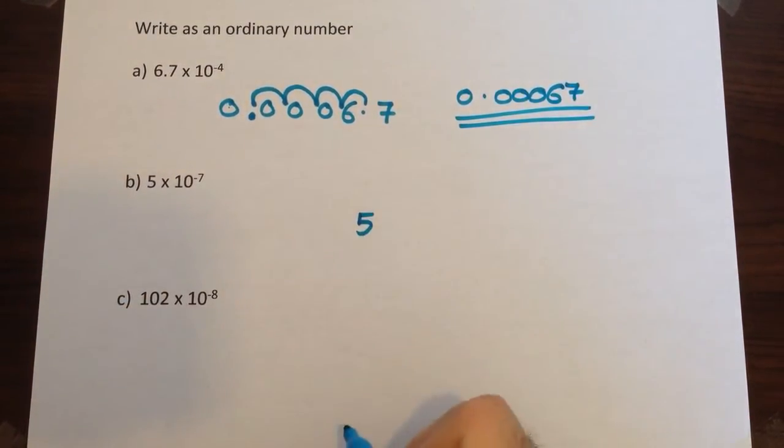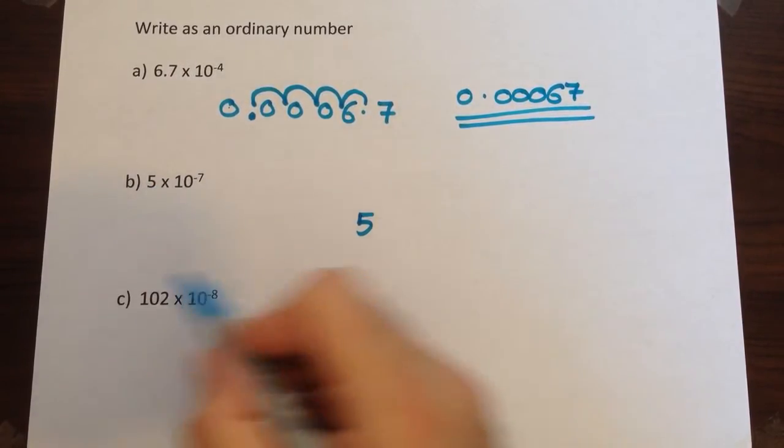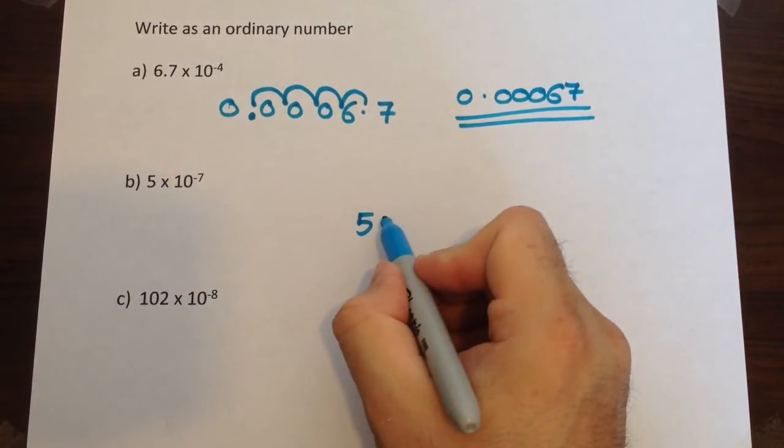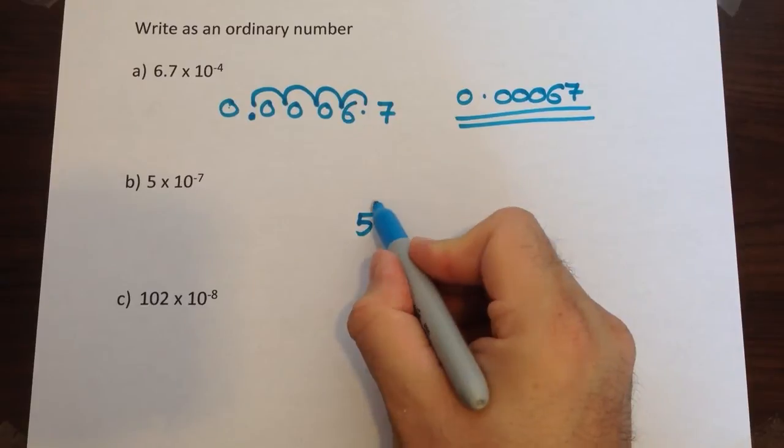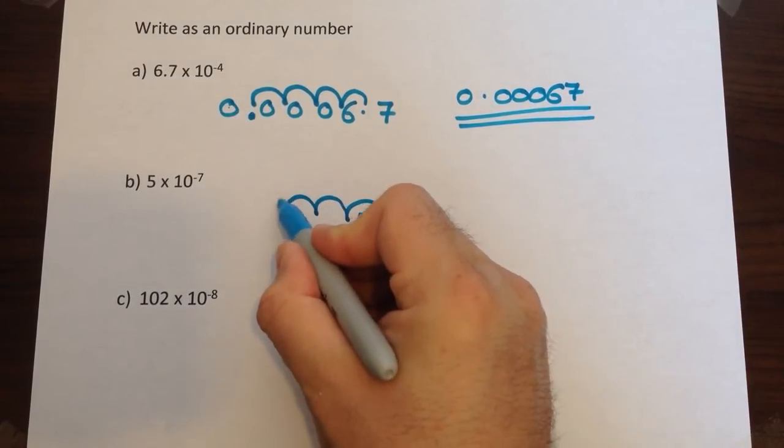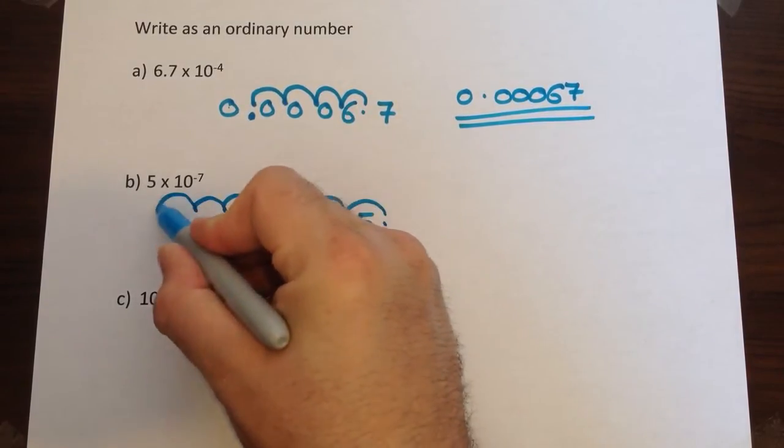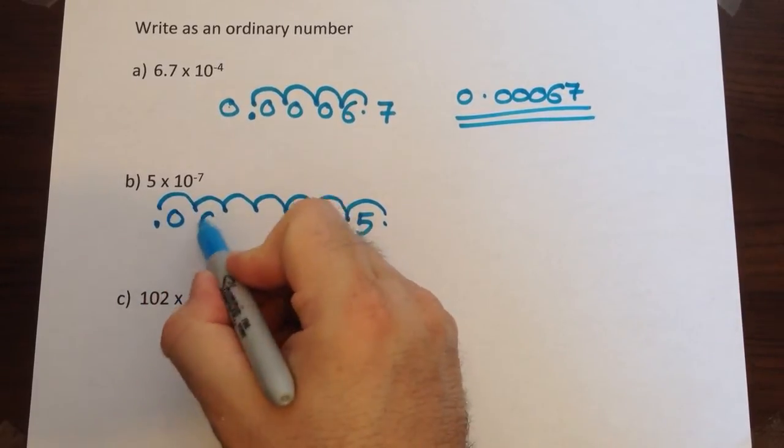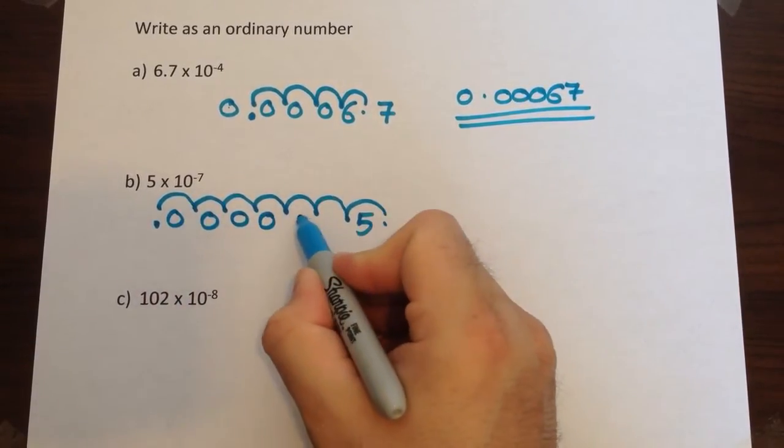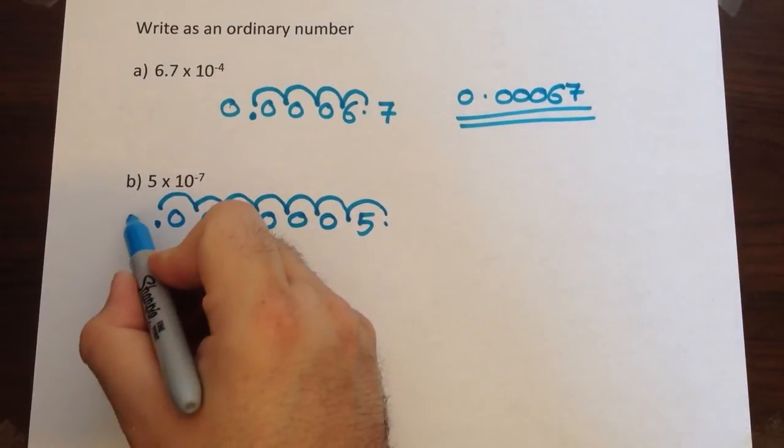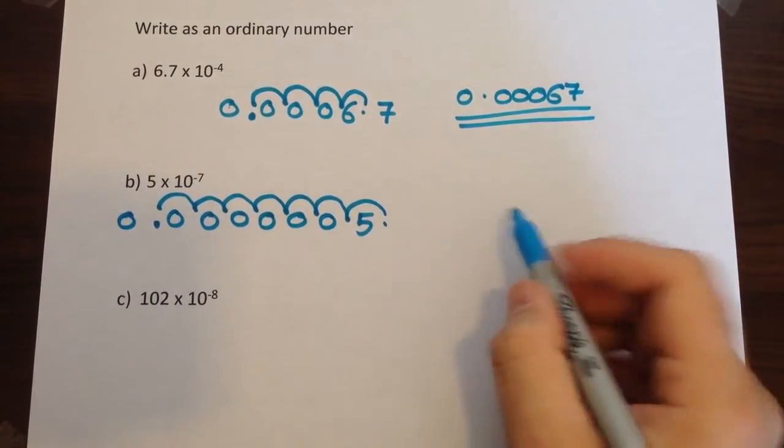Start with a 5, slightly more difficult because there's no decimal point shown to begin with, but every number has a decimal point. It would be there. Now we're going to move it seven places to the left: one, two, three, four, five, six, seven. It's there. Fill in the gaps and put your zero on the start. Rewrite it correctly.